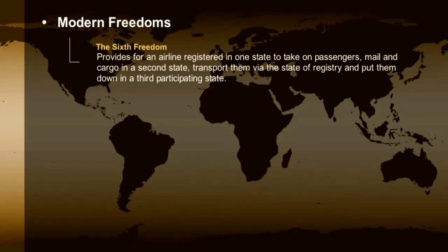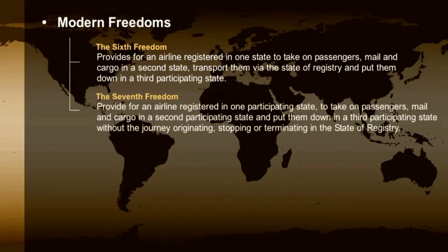The sixth freedom provides the privilege for an airline registered in one state to take on passengers, mail and cargo in a second state, transport them via the state of registry, and put them down in a third participating state. The seventh freedom provides for an airline registered in one participating state to take on passengers, mail and cargo in a second participating state and put them down in any other participating state without the journey originating, stopping or terminating in the state of registry.